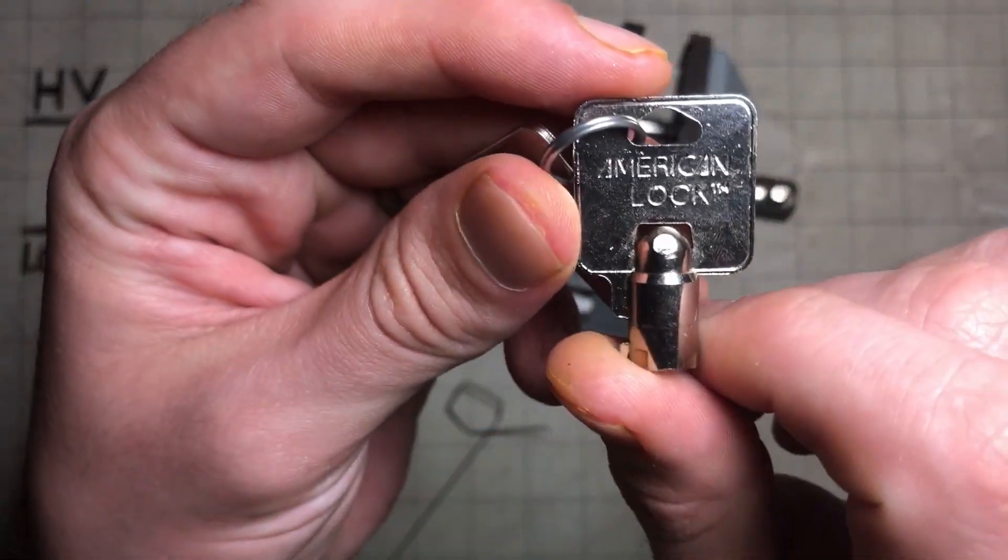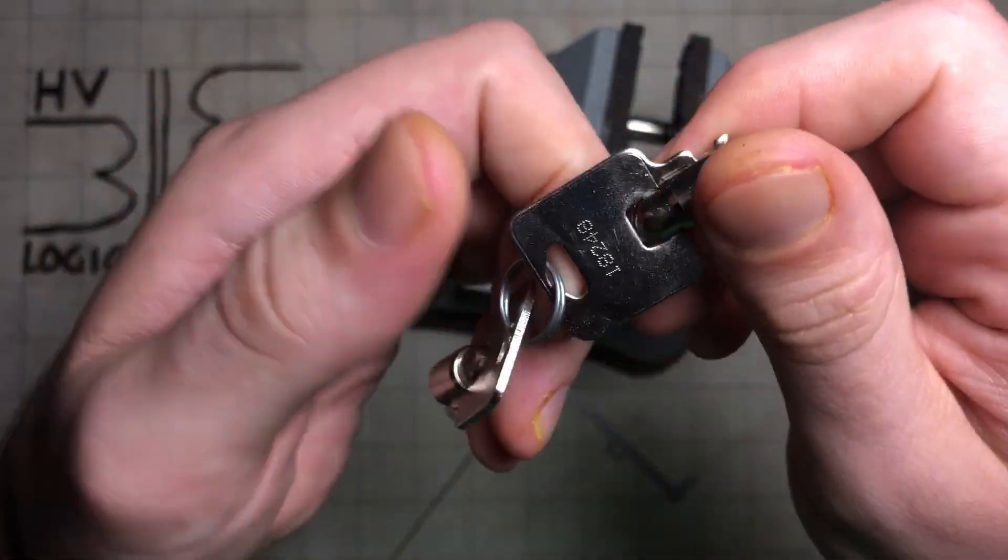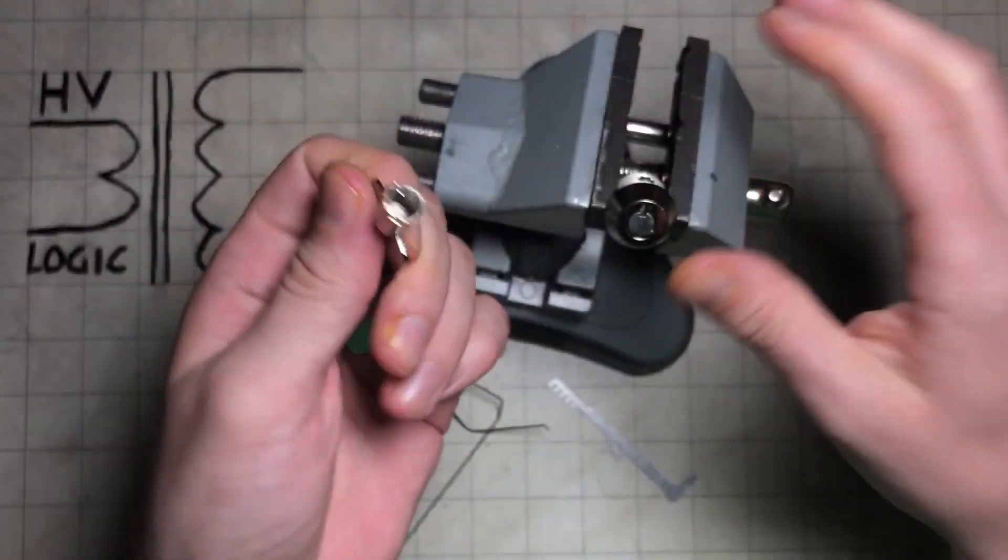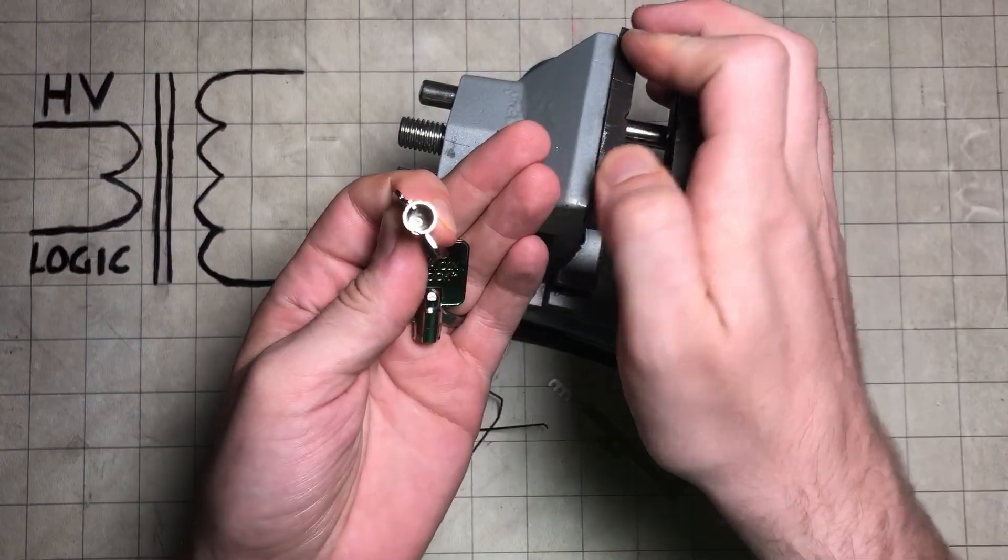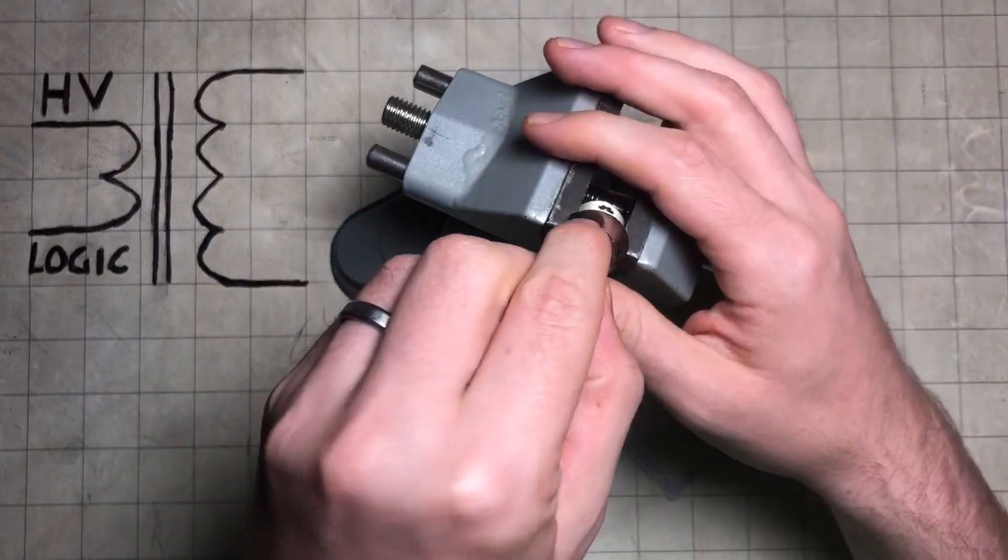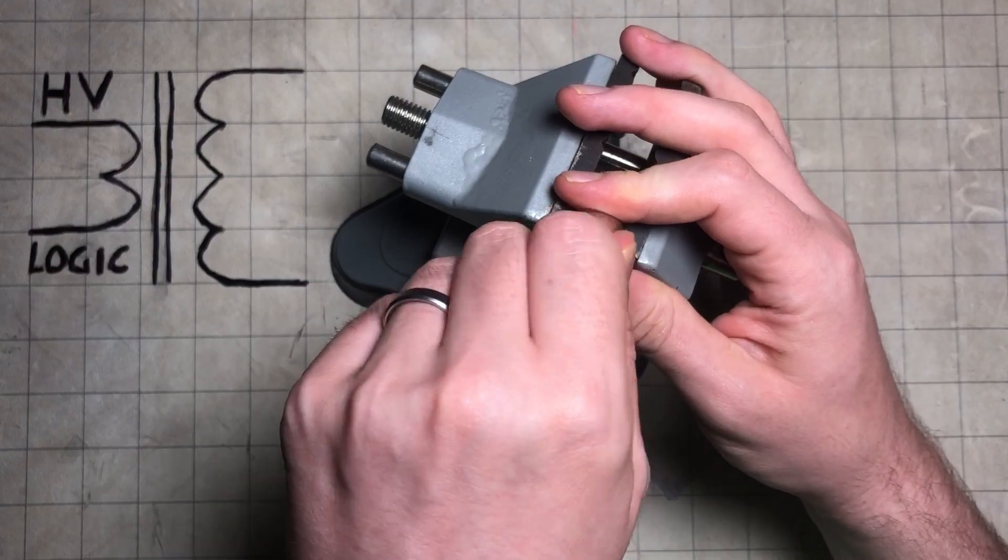Okay, I have here an American lock tubular, which is slightly more interesting than a normal tubular lock because these ones have spool pins in them.